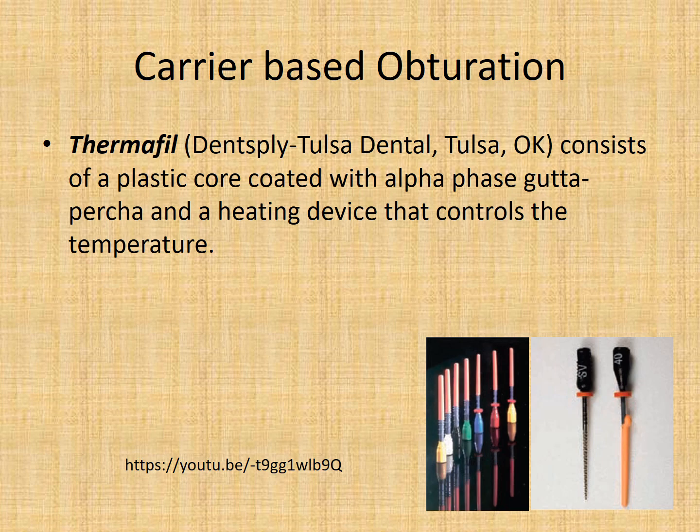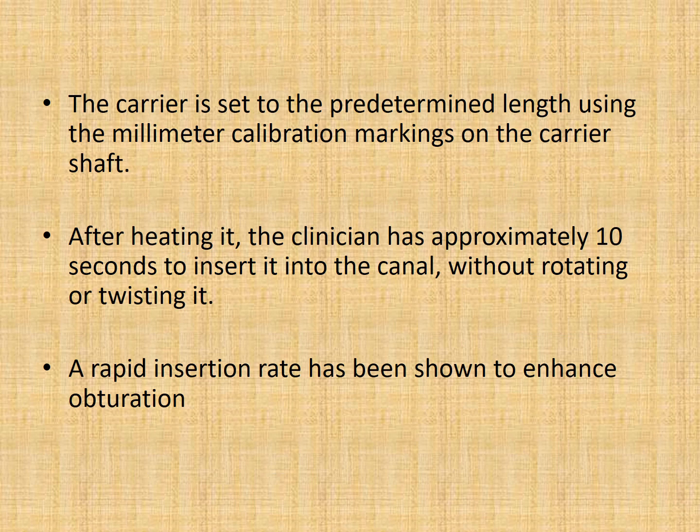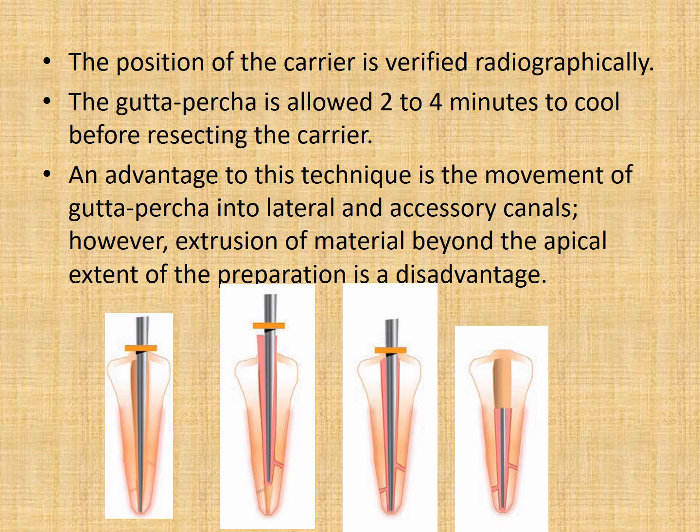The next technique is carrier-based obturation; an example is Thermafil by Dentsply. It consists of a plastic core coated with alpha phase gutta percha and a heating device that controls the temperature. The carrier is set to a predetermined length using the millimeter calibration markings on the carrier shaft. After heating, the clinician has approximately 10 seconds to insert it into the canal without rotating or twisting it. A rapid insertion rate has been shown to enhance obturation. The position of the carrier is verified radiographically. The gutta percha is allowed 2-4 minutes to cool before rejecting the carrier. The main advantage is movement of gutta percha into lateral and auxiliary canals; however, extrusion of material beyond the apical extent of preparation is a disadvantage.